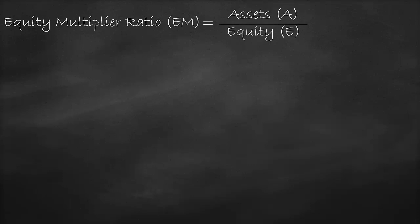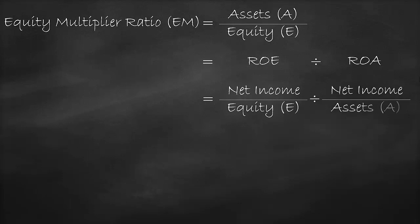We can rewrite the equity multiplier ratio as the return on equity divided by the return on assets. The return on equity is net income divided by equity. The return on assets is net income divided by assets.